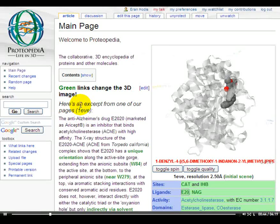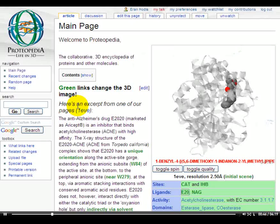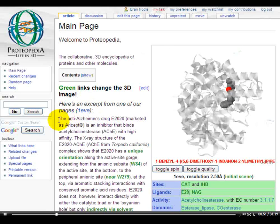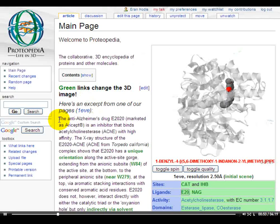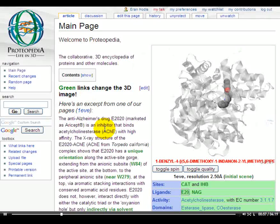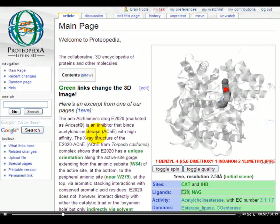For example, here's an excerpt from one of our pages, 1EVE, titled for the PDB entry with the same name. As we read, the anti-Alzheimer's drug E2020, marketed as Aricept, is an inhibitor that binds acetylcholinesterase with high affinity.